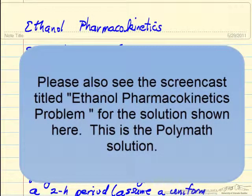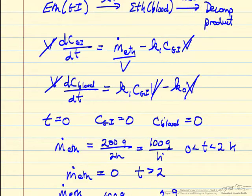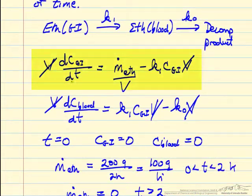In this video we will show the Polymath program that solved the problem presented in another screencast. This is ethanol processing in the body, essentially how ethanol goes from the GI tract into the bloodstream and then decomposes. We can create a simplified model in which we have a mass balance for the GI tract.